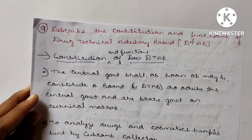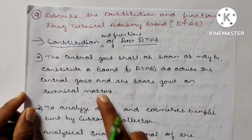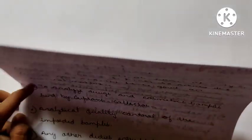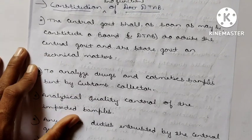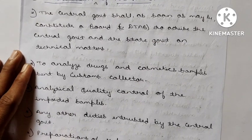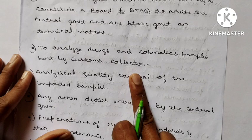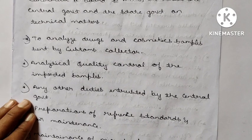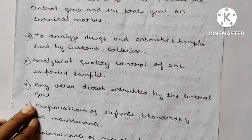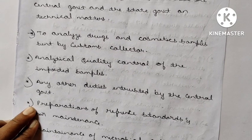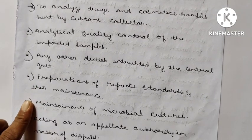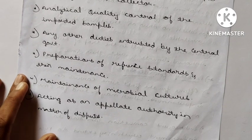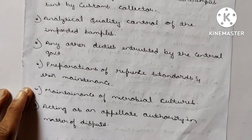Question 9: Describe the constitution and function of the Drug Technical Advisory Board (DTAB). The central government shall constitute the DTAB to advise the central and state governments on technical matters. Functions include: analyzing drug and cosmetic samples sent by the customs collector; quality control of imported samples from other countries; any other duties entrusted by the central government; preparation of reference standards and their maintenance; and maintenance of microbial cultures. The DTAB also acts as an appellate authority in matters of disputes.